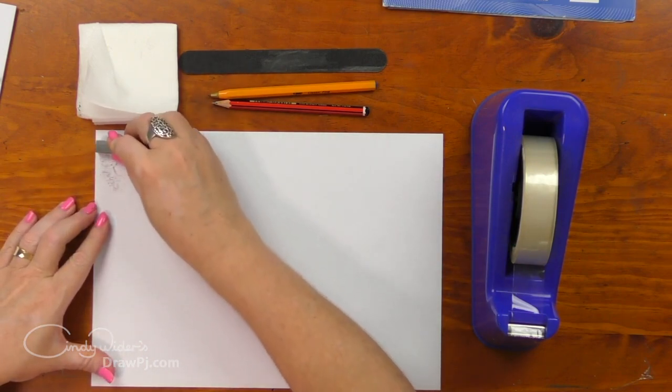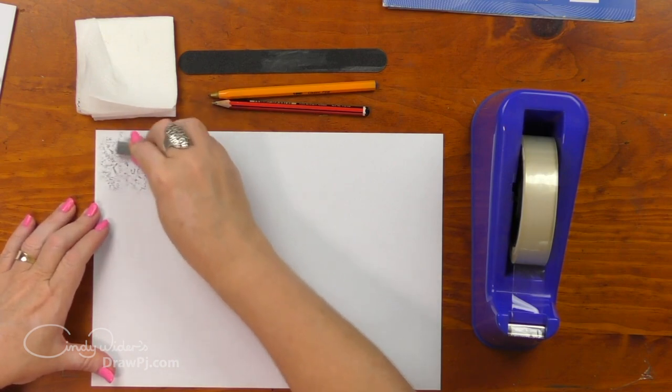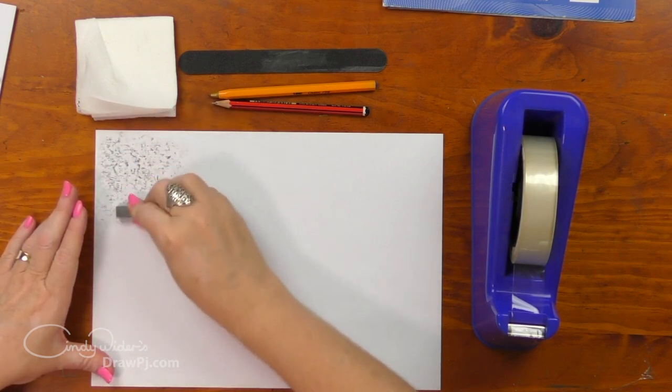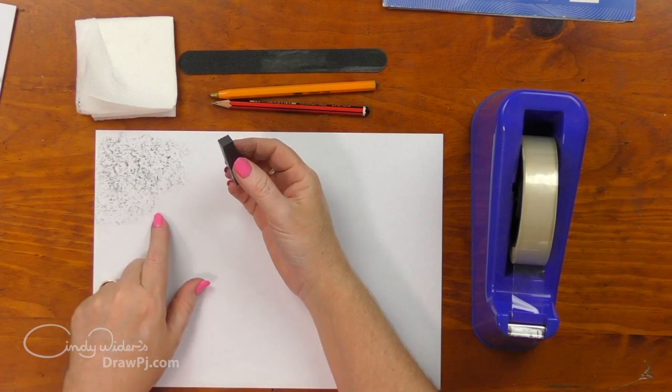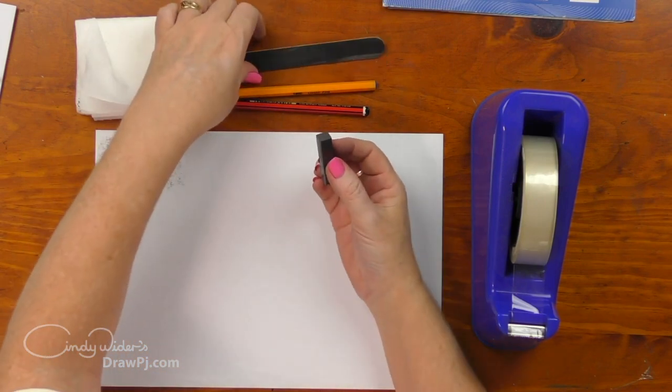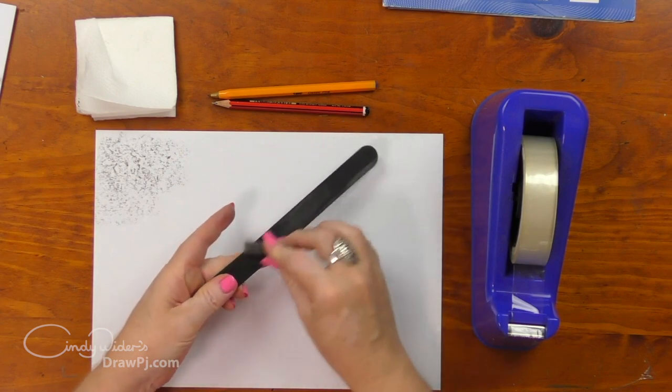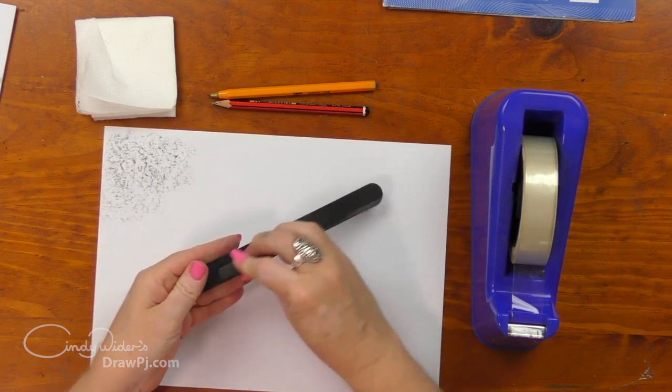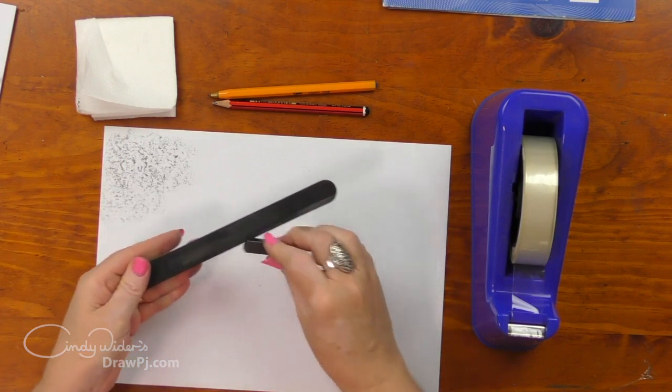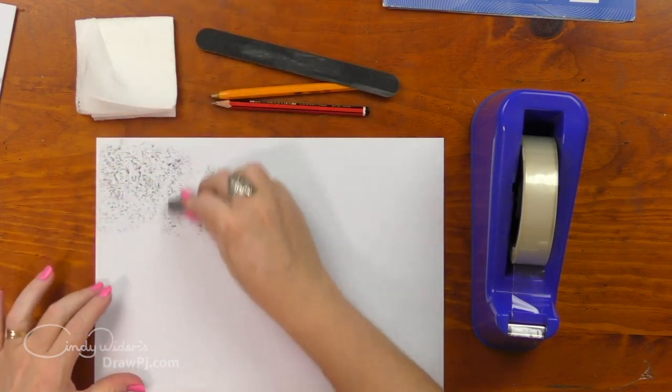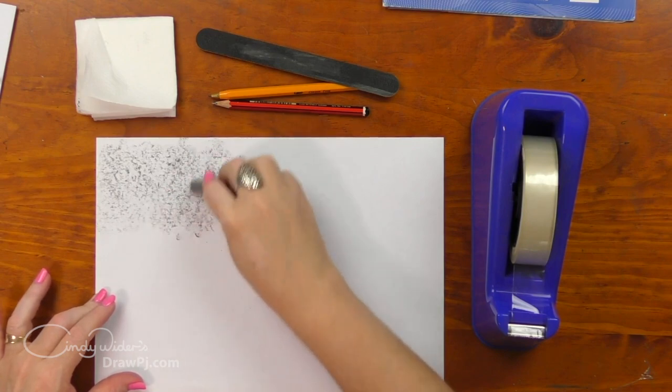So all you're doing with this is you're just rubbing it across the surface of the page. If you find it's a bit slippery like mine is and it's not really covering, then you can use an emery board or some sandpaper to actually rub it across the sandpaper just to scuff it up a little tiny bit and then it works a bit better. So that's better, it's catching on the page more now.